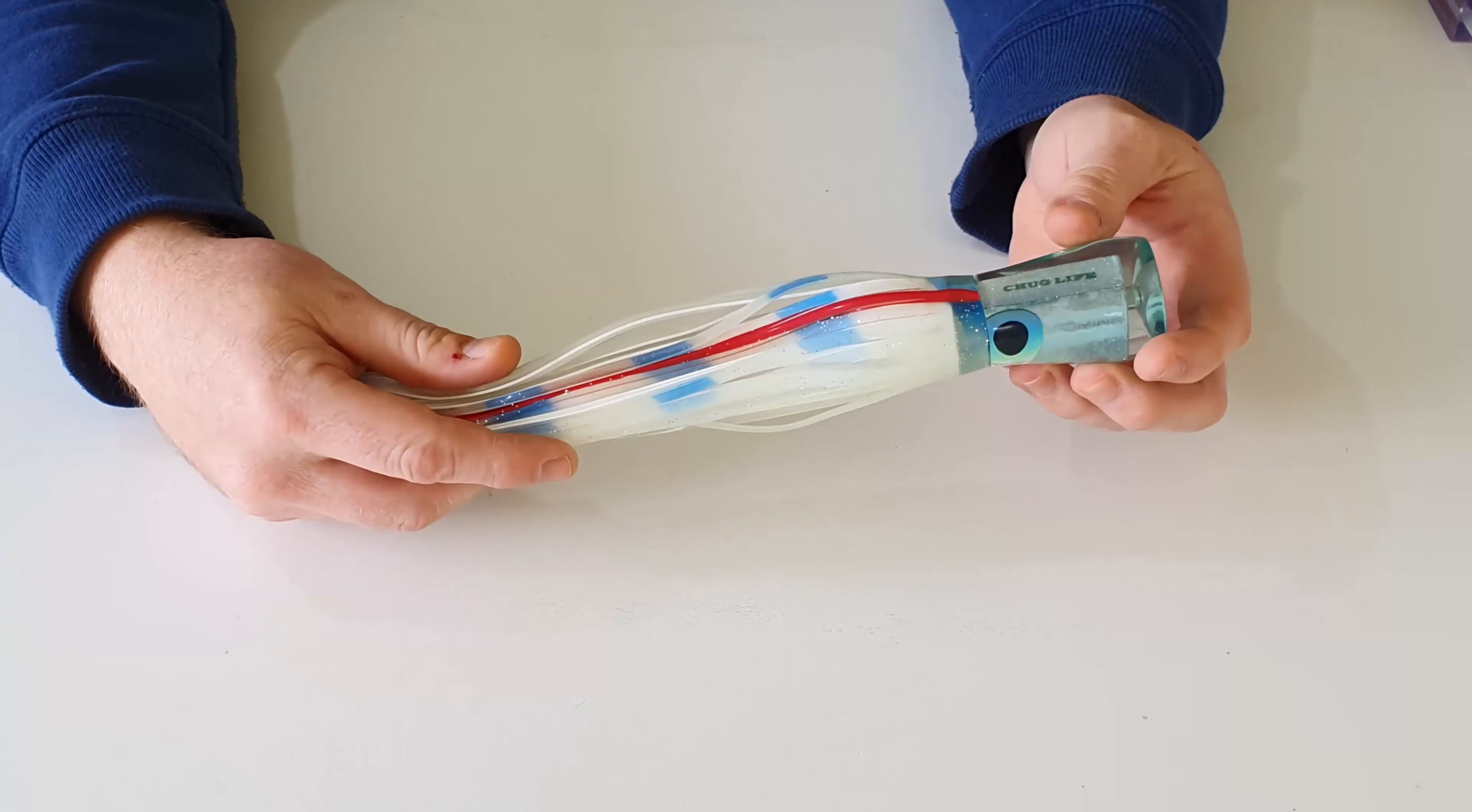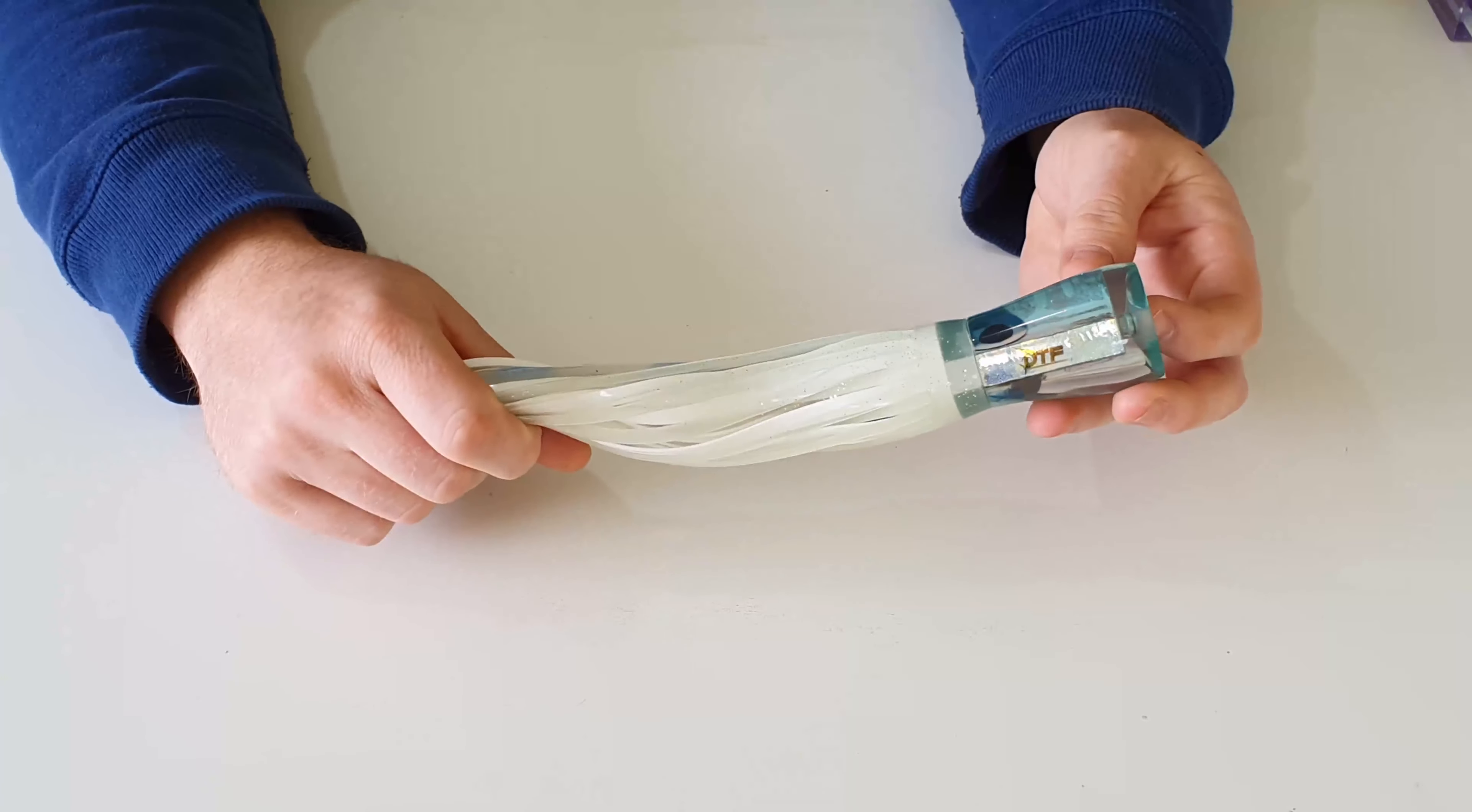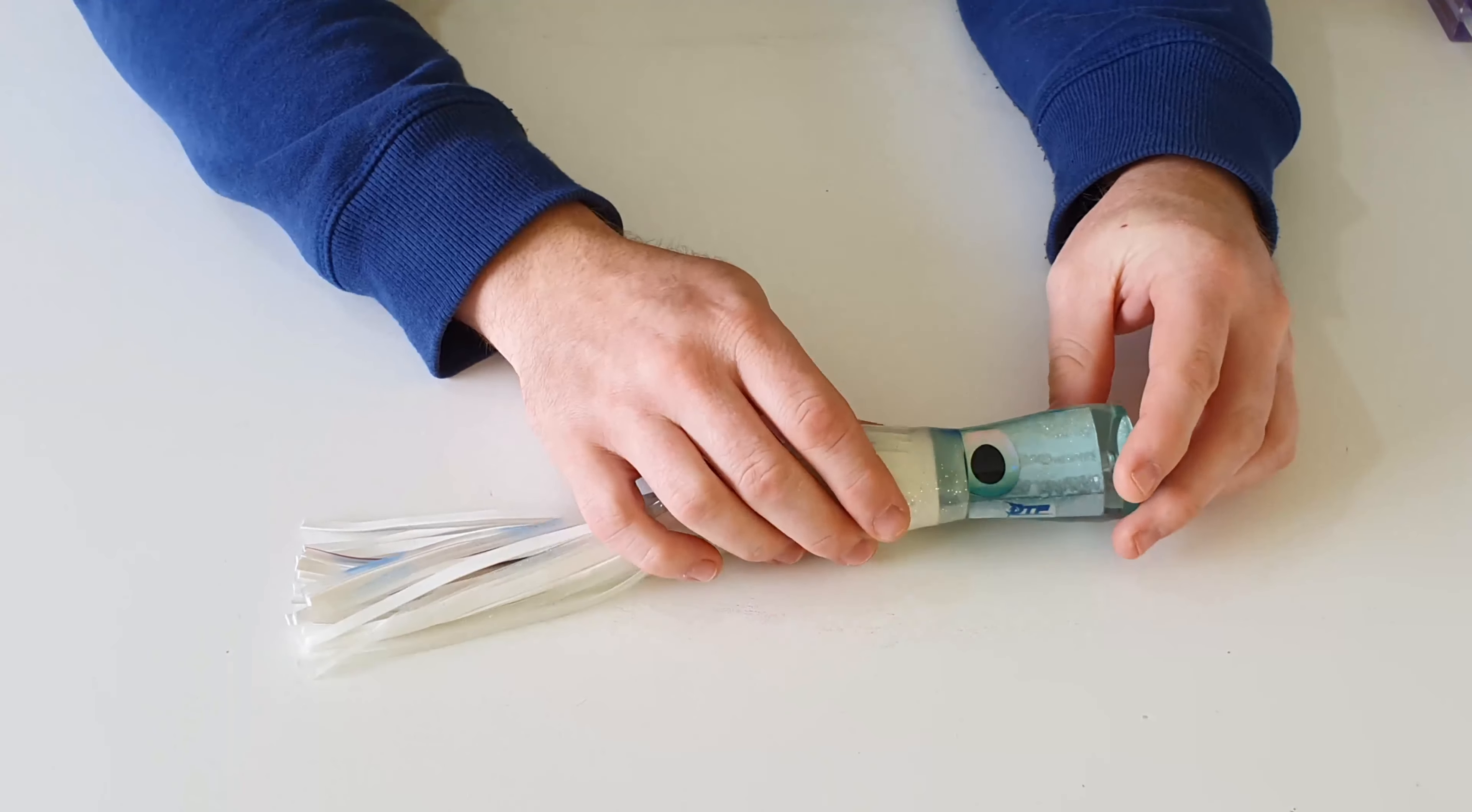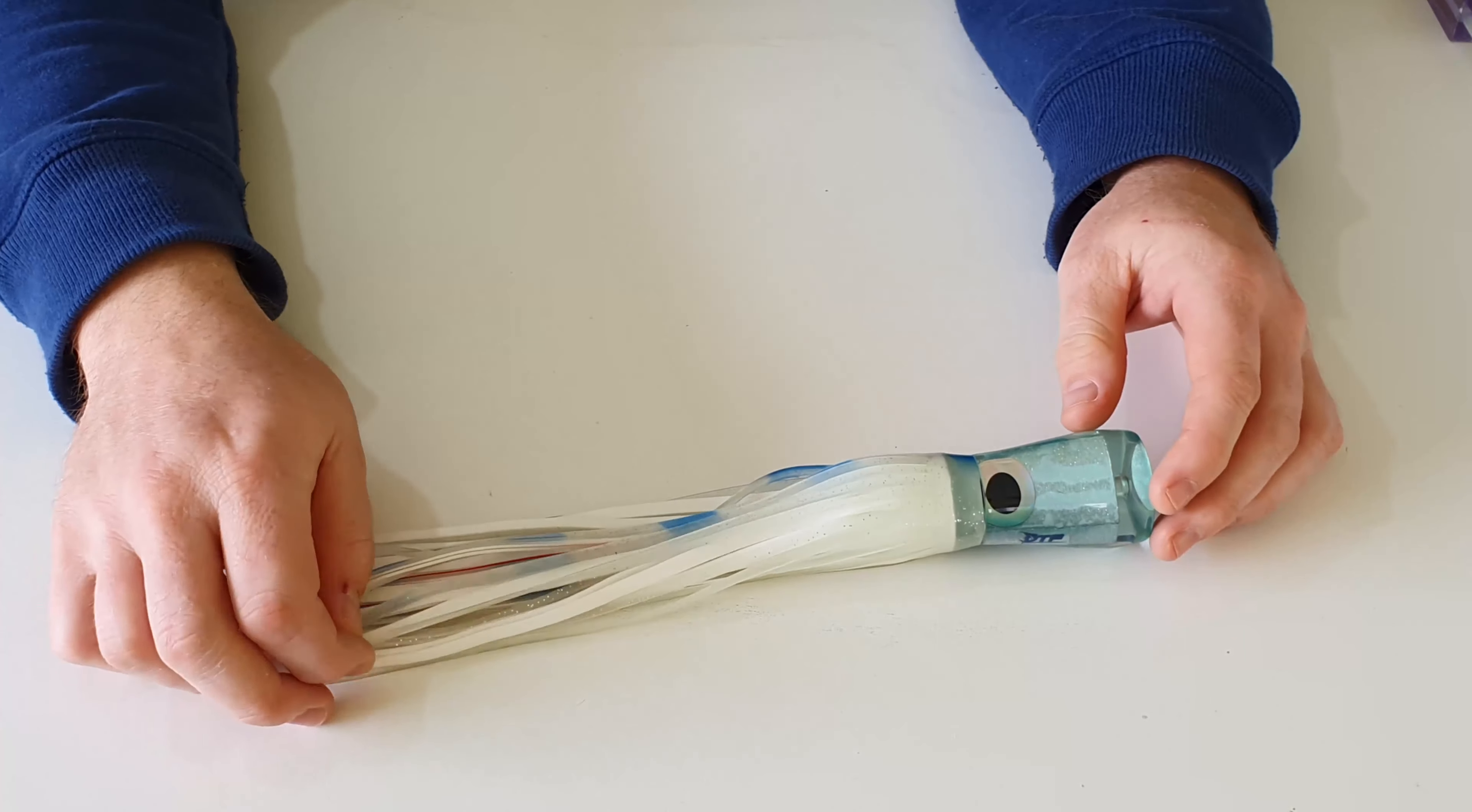Chugger lures are very popular and quite a traditional sort of head shape. It's one that gets forgotten but it's actually accounted for quite a lot of fish as well.